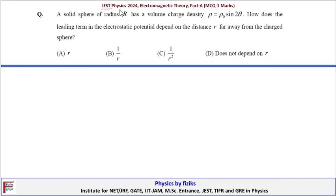This is JEST Physics 2024 Electromagnetic Theory Part A MCQ, 1 mark question. In this question, a solid sphere of radius R has a volume charge density ρ = ρ₀ sin(2θ), and we have to see how the leading term in the electrostatic potential depends on the distance R far away from the charged sphere. We have to find the approximate dependence.